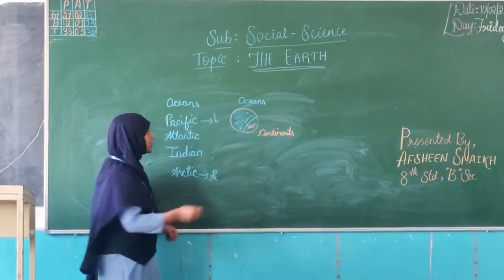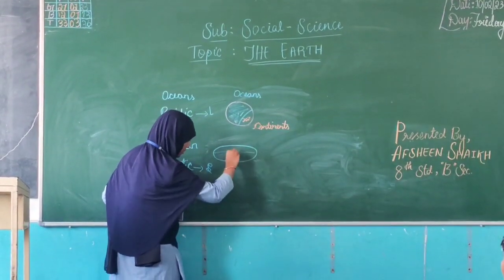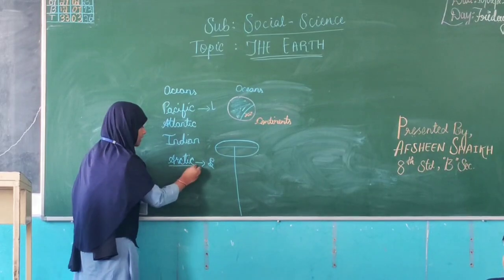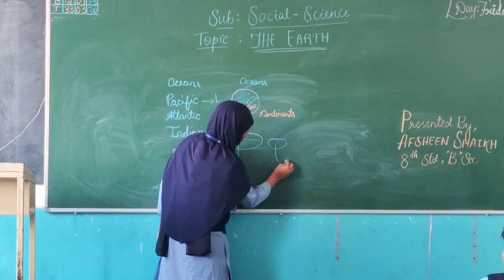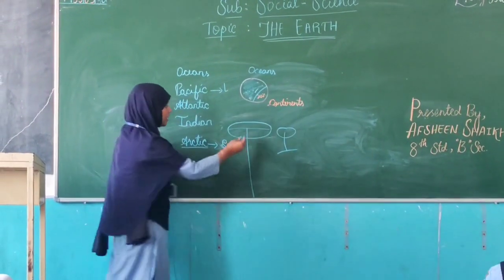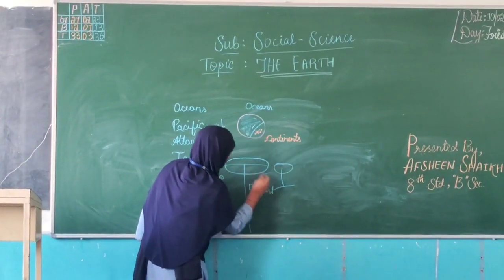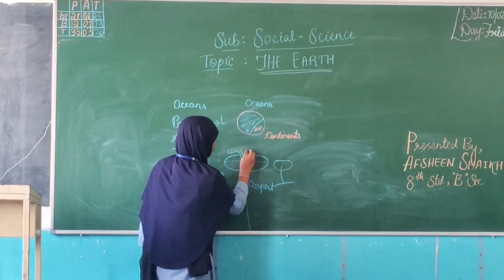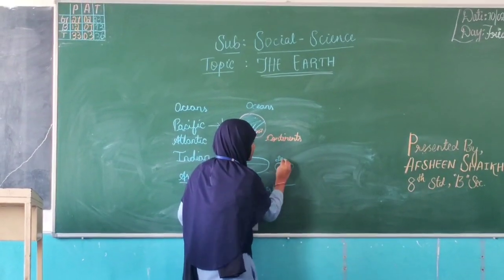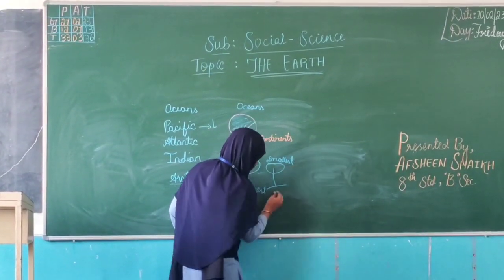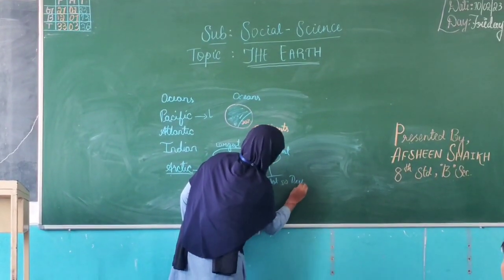The Arctic Ocean is the smallest one. The Pacific Ocean is the deepest and the largest. Consider the Pacific Ocean as very large and very deep, while the Arctic Ocean is very small and not much deep. The Pacific is the deepest and largest, and the Arctic was the smallest.